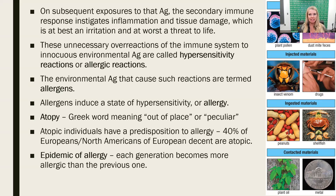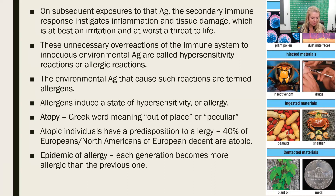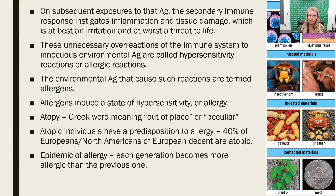Another word you'll often see mentioned along with allergy or hypersensitivity is atopy. Atopy comes from adding an 'a' in front of 'topi,' meaning place — so atopy is the Greek way of saying out of place, or peculiar. It's not normal; it's not where it should be. An atopic individual is somebody that has atopy, meaning they are predisposed to allergy. Atopic individuals make up about 40% of Europeans or North Americans of European descent — it is not a worldwide population phenomenon.